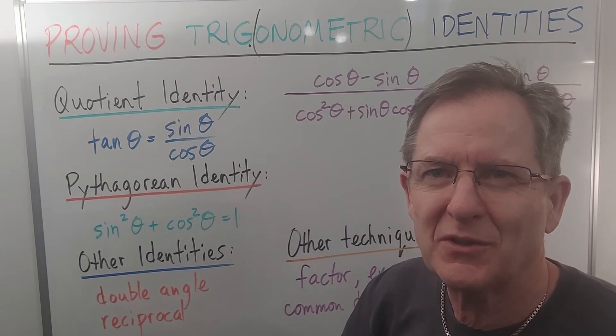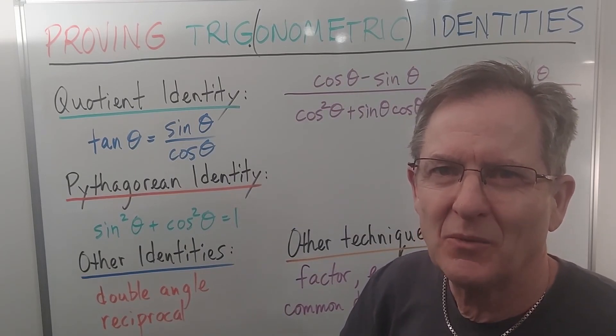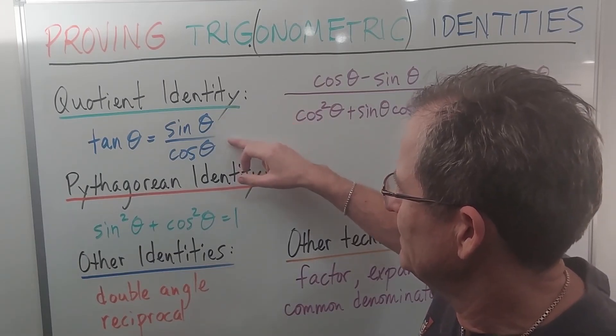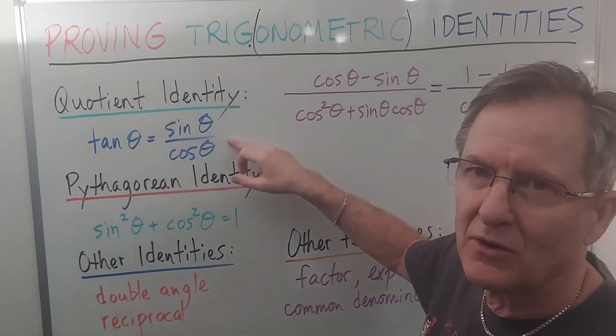Okay, how do we prove trigonometric identities? Well, we use other identities such as the quotient identity, which is tan θ equals sin θ over cos θ.